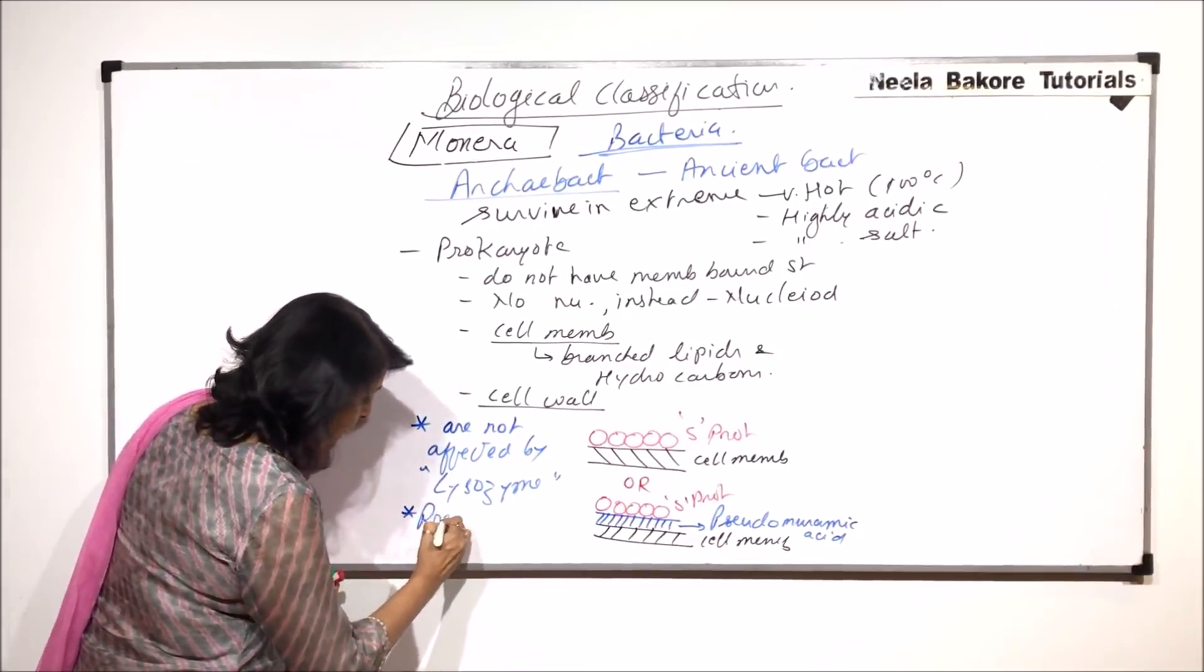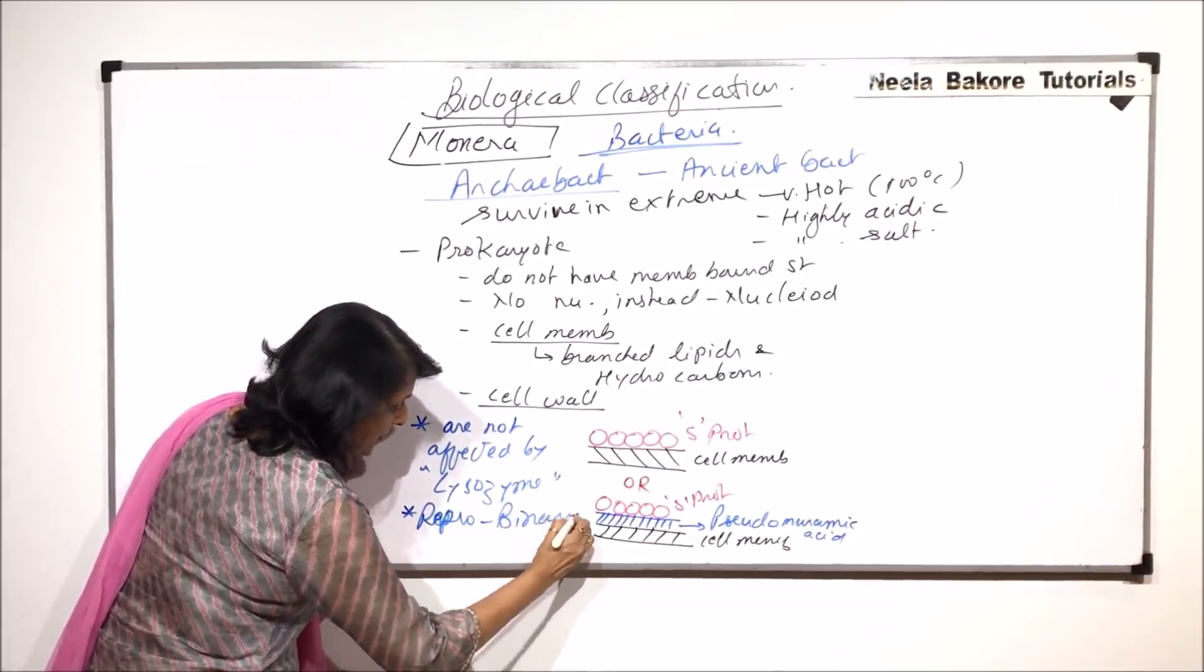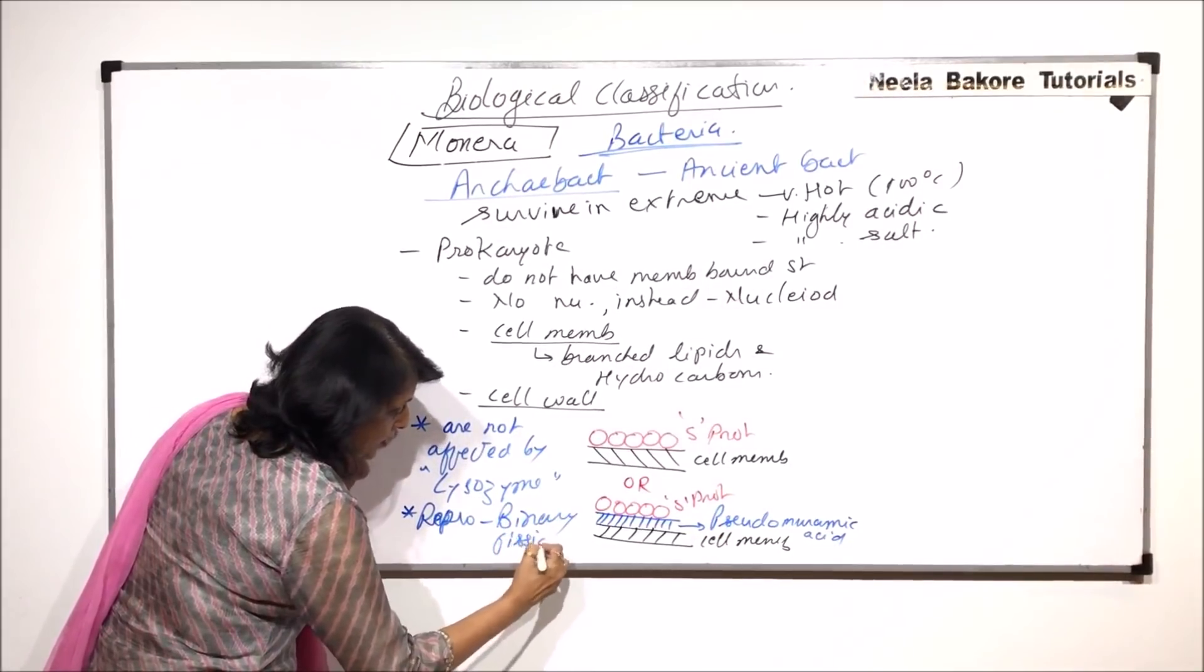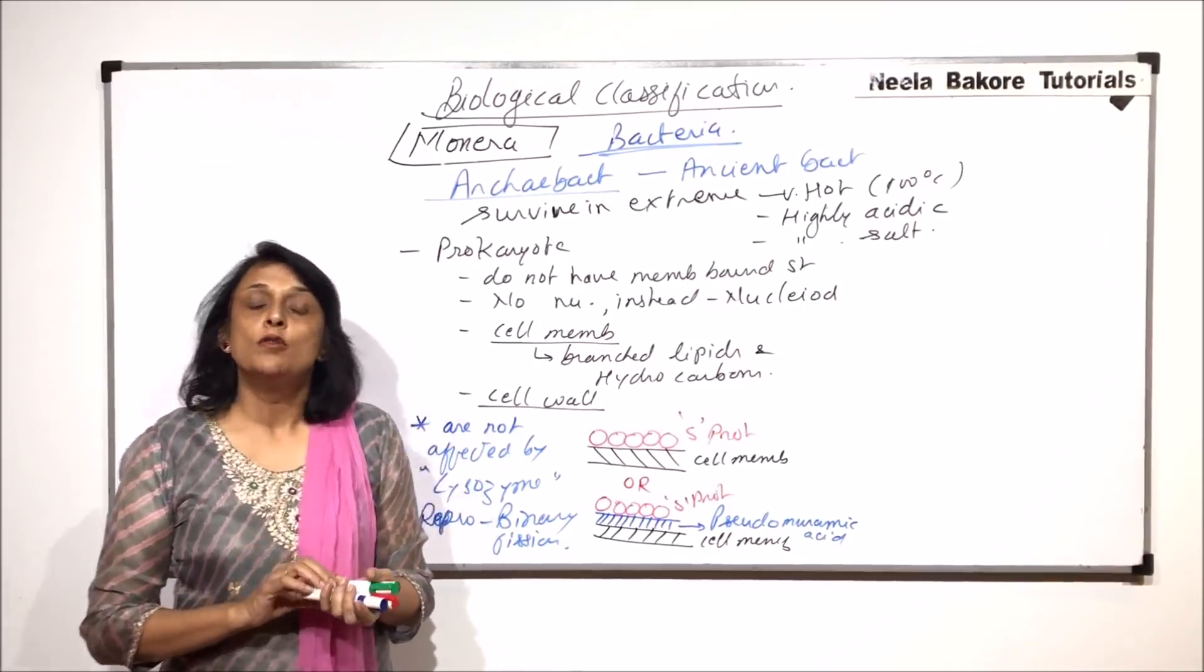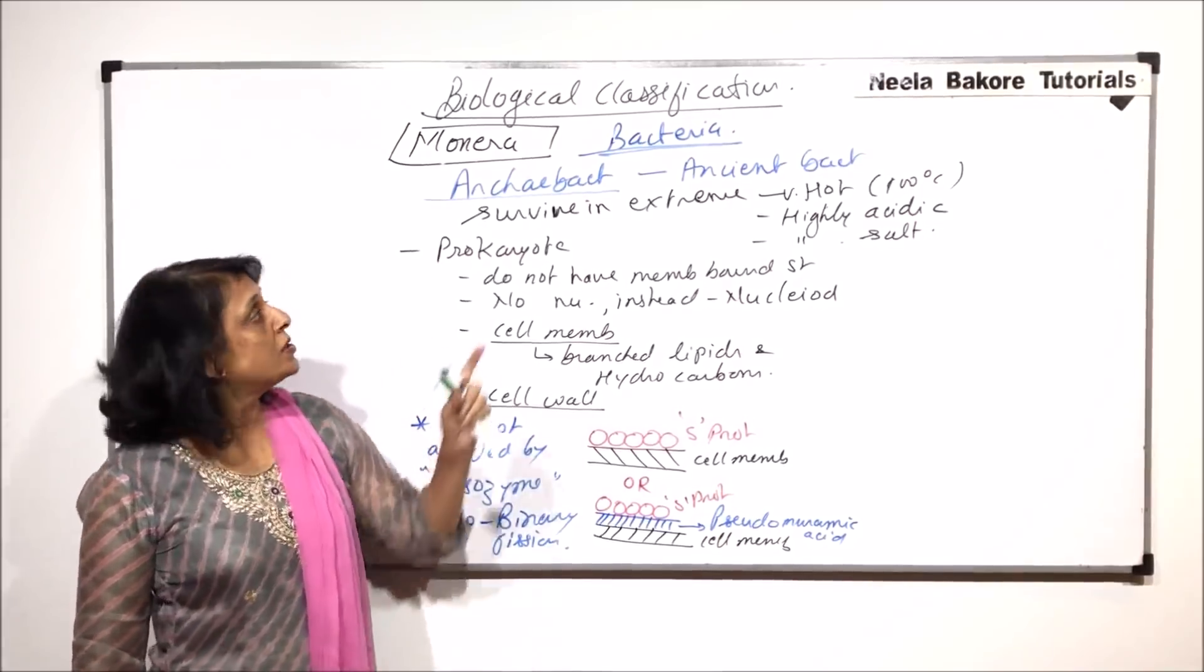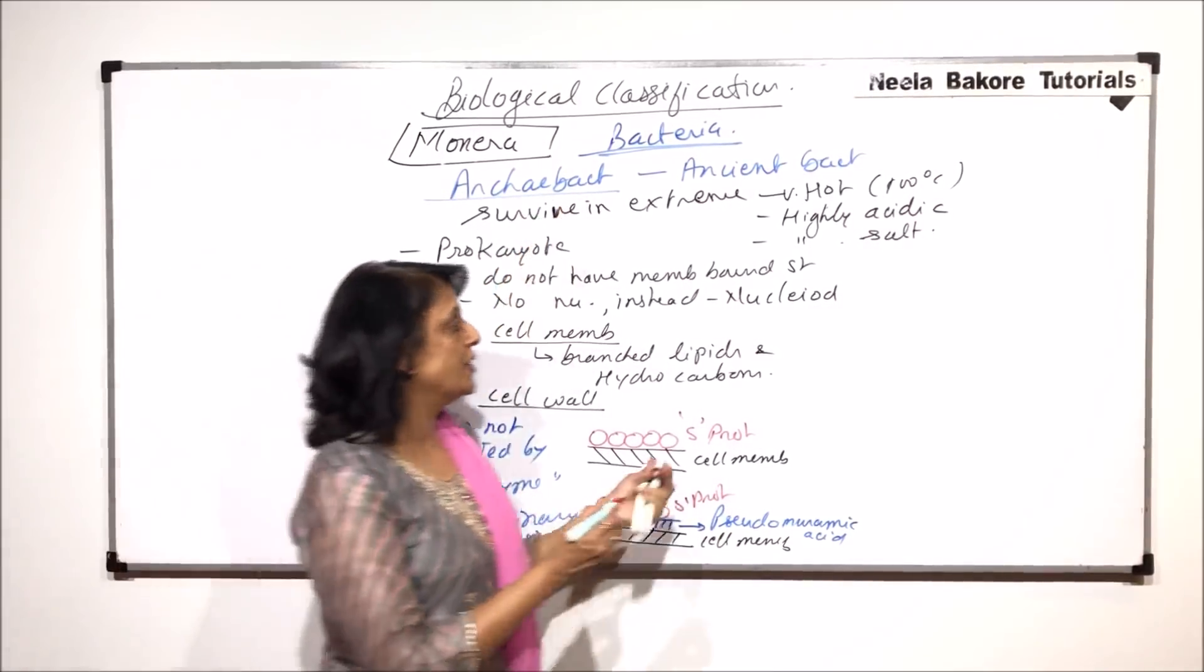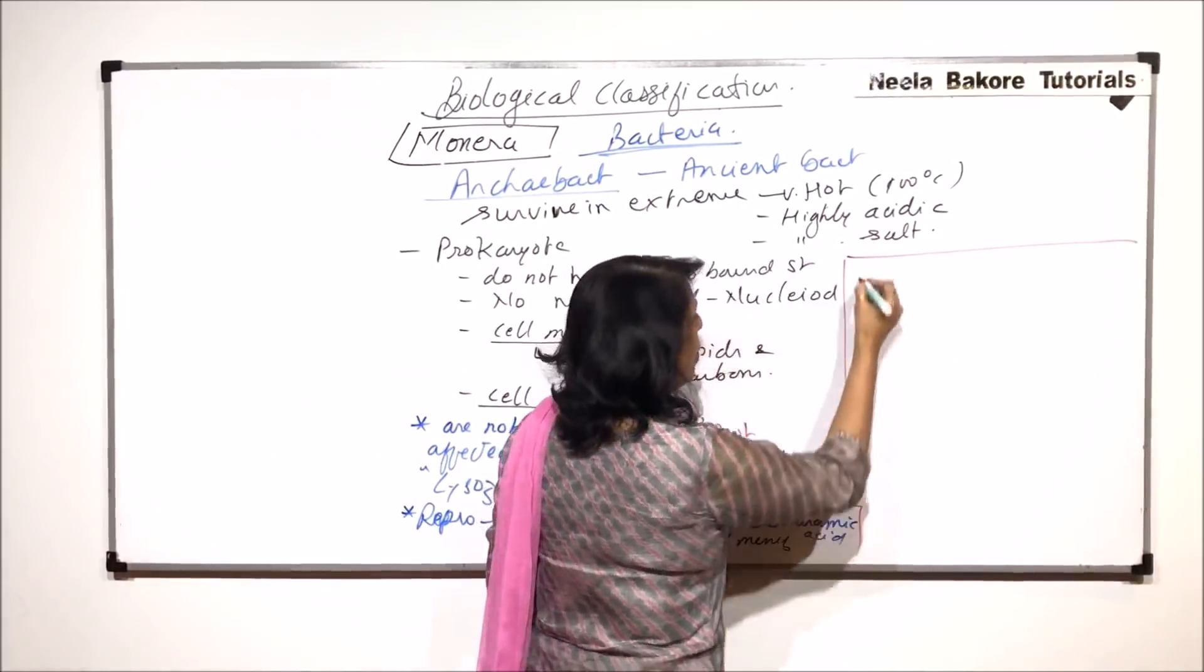In case of archebacterians reproduction is by binary fission. So this is similar to what we have seen in case of normal eukaryotic cells. Now we will talk about three special types of archebacterians which are the most common ones that we talk of.